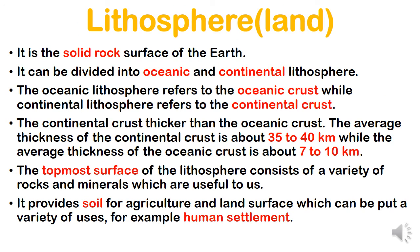Next, lithosphere means land. It is the solid rock surface of the earth. Land can be divided into two types: oceanic and continental. Oceanic land is the land found under oceans and seas. Continental land is where we live — our countries, islands — that is continental land.